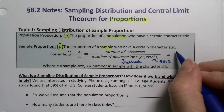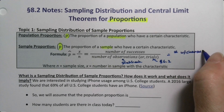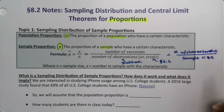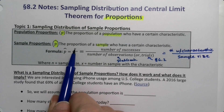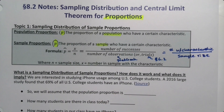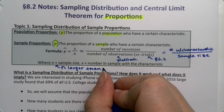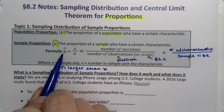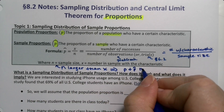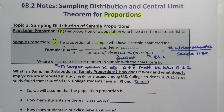P-hat is the number with the characteristic divided by the sample size. Always keep in mind that N should be larger than X, because the proportion P-hat must be less than 1 — it has to be a decimal between 0 and 1. We learned in chapter 5 that proportions have to be between 0 and 1.